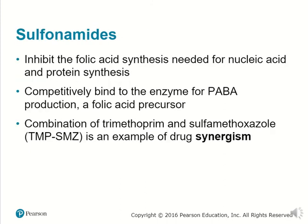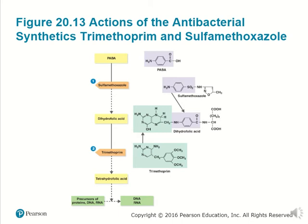Sulfonamides inhibit the folic acid synthesis needed for nucleic acid and protein synthesis. They competitively bind to the enzyme for folic acid production, which is a folic acid precursor. There can be a combination of trimethoprim and sulfamethoxazole, which is an example of synergism — a combination of two helpful drugs to better increase their effectiveness.